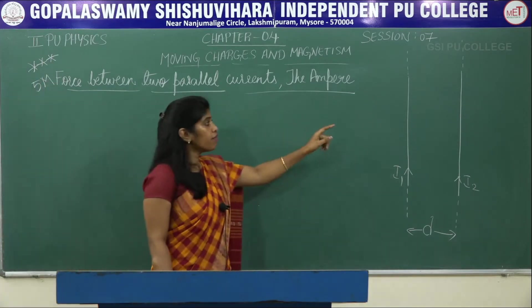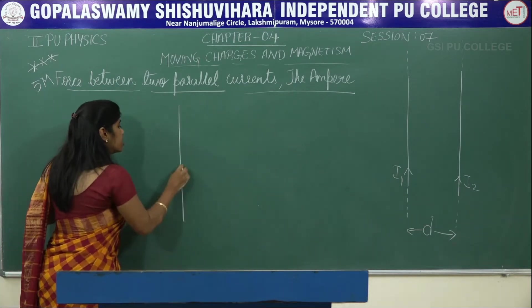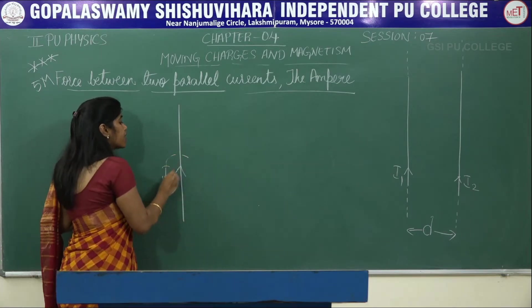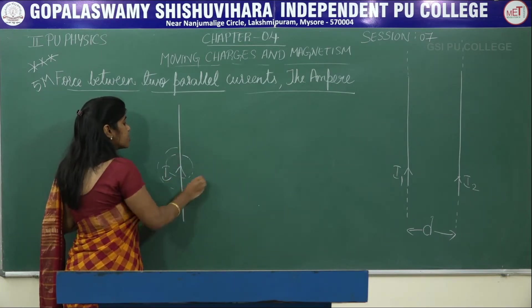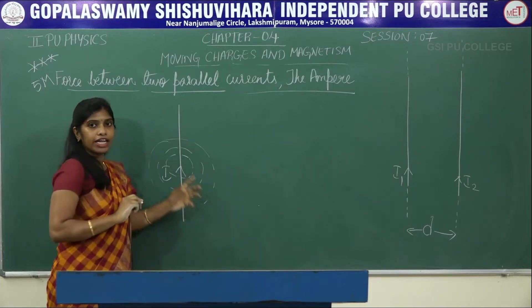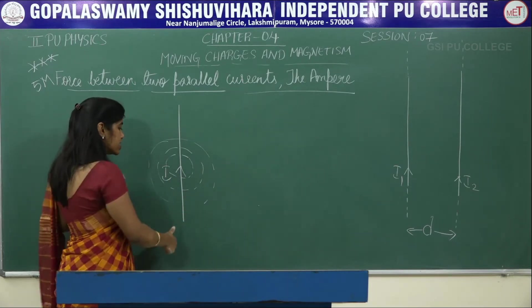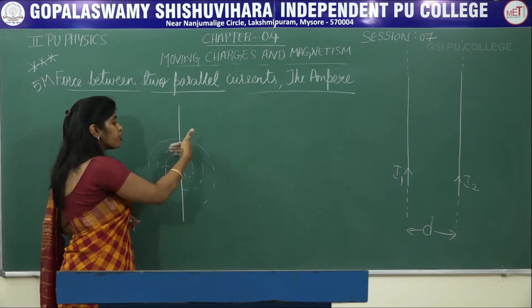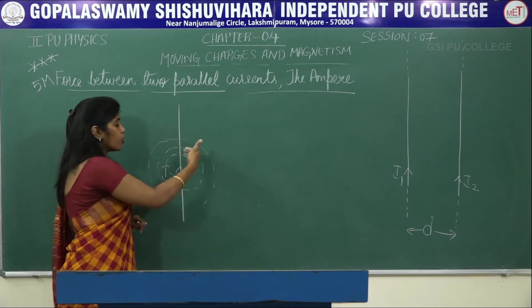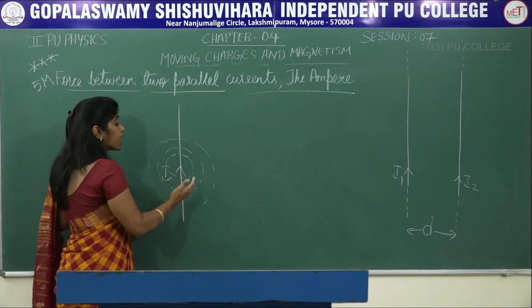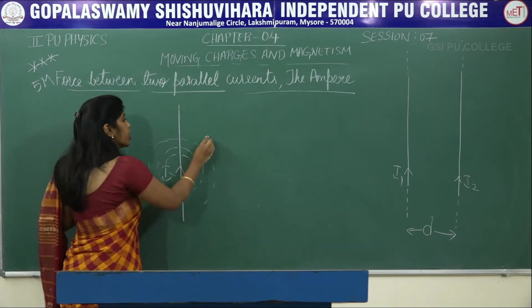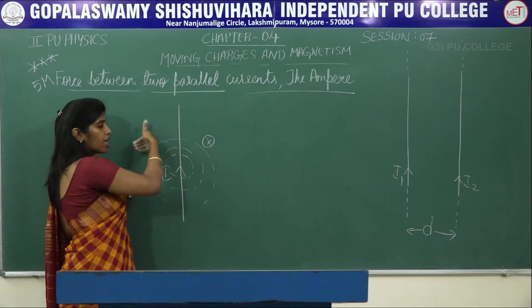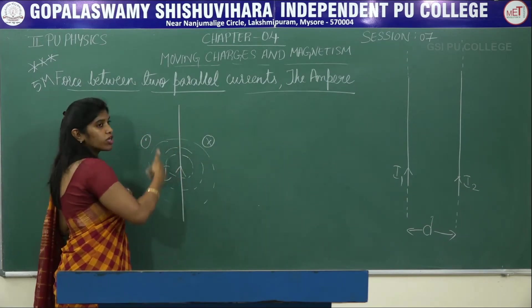If we have a conductor carrying current, a magnetic field is produced around it and the magnetic field lines form closed loops. Using the right-hand thumb rule, the thumb points in the direction of the current and the fingers curl in the direction of the magnetic field. So the magnetic field goes in on one side and comes out on the other.